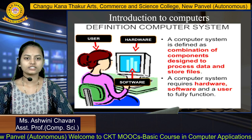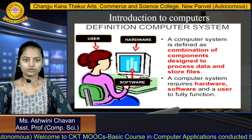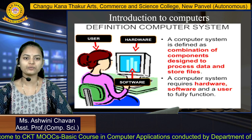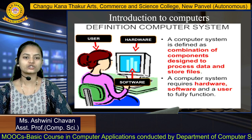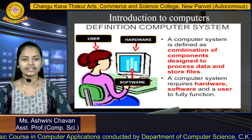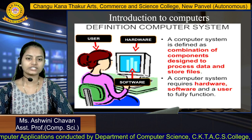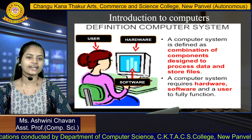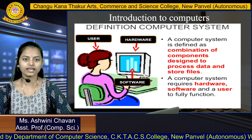We will first see the definition of the computer system. The computer system is defined as a combination of components which are designed to process data and store files. Once we store particular data in our computer, we can further use that data — we can read it and make any kind of modification as per the user's requirement.